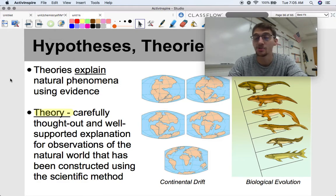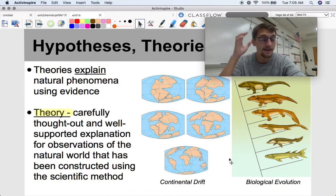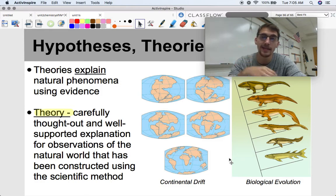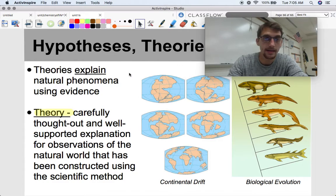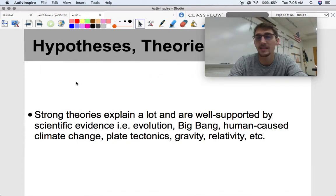These are two really big theories over here. Continental drift explains patterns of evidence in geology and paleontology, why we might find fossils of tropical plants in Antarctica, or we might find the same fossil of fish in South America as we do in Africa. Same idea with biological evolution. This explains why we see things the way they are in biology. It's carefully thought out, and it's very, very well-supported in science. So that's what a theory does. It does the explaining.